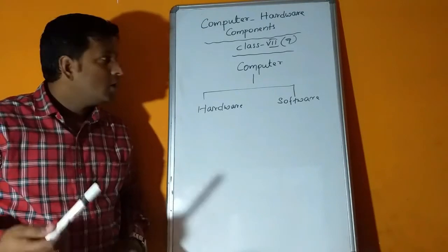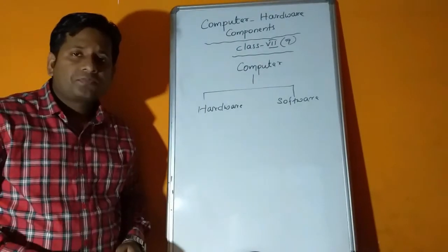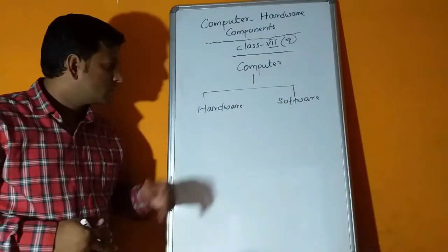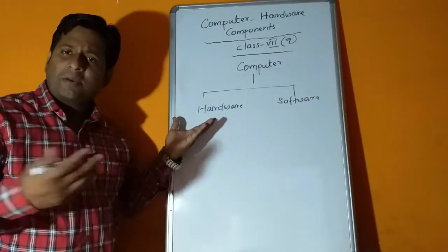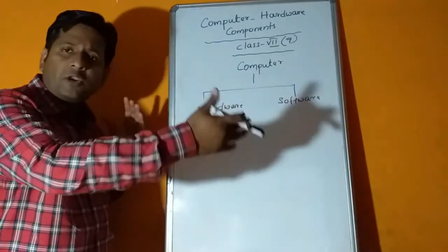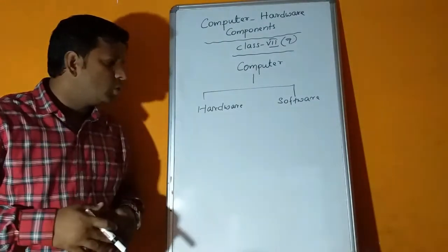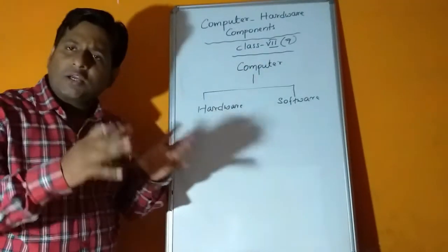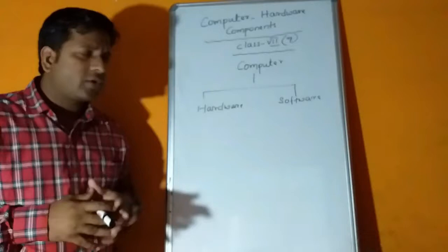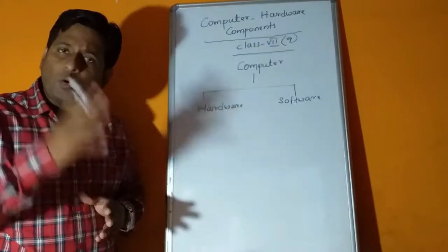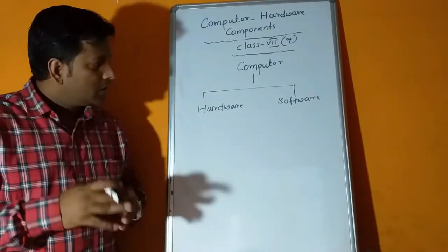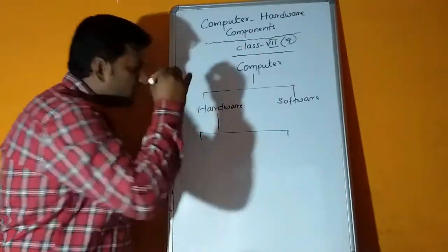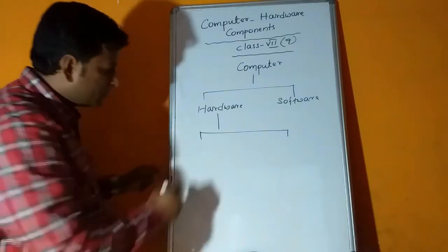Good morning children. In the last class I discussed what is a computer system. A computer system is a machine with parts or components that include hardware and software. I told you hardware is the part of computer which you can touch, whereas software is the part you cannot touch.